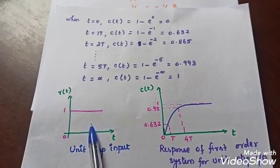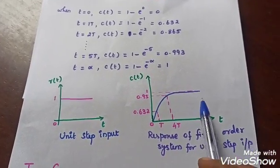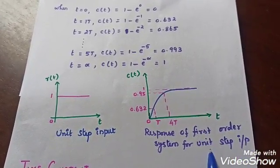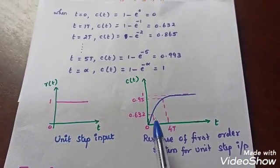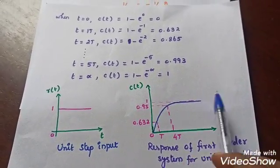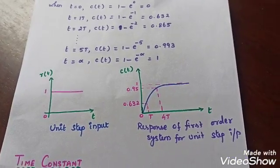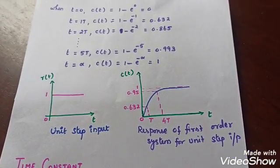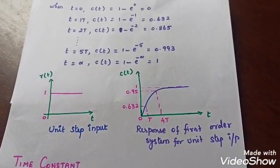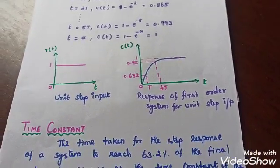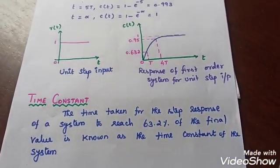For the unit step input, this is the response we are getting, which is plotted here. This is the response of the first order system for unit step input.